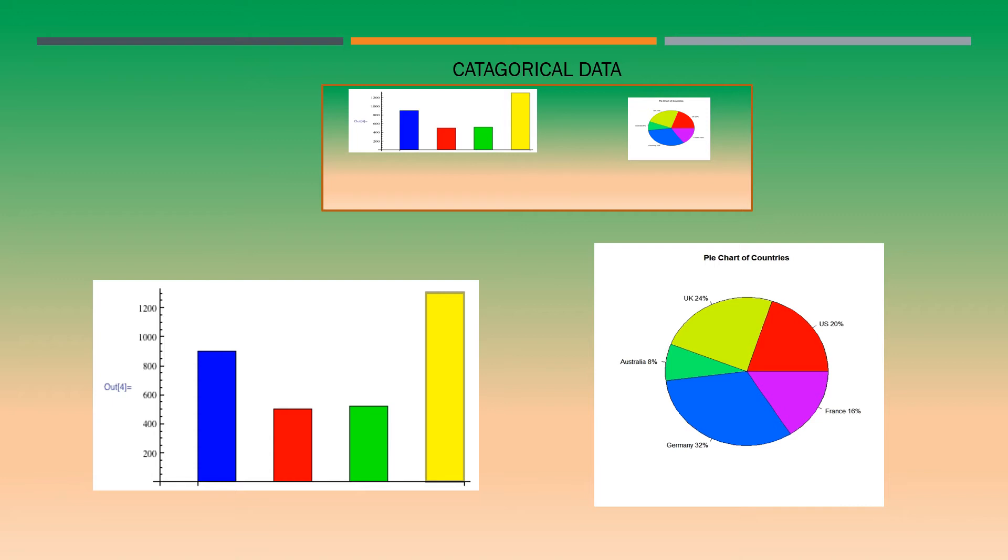The distribution of a variable describes what values the variable takes and how often it takes these values. Pie charts and bar graphs display the distribution of a categorical variable. Bar graphs can also compare any set of quantities measured in the same unit.